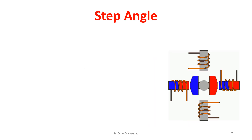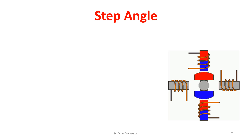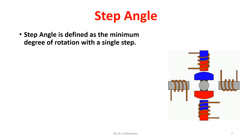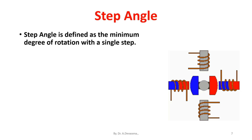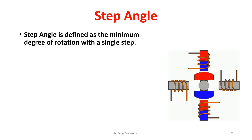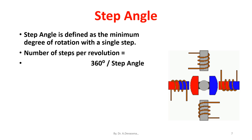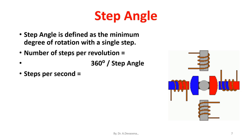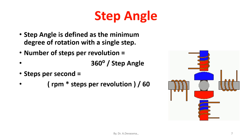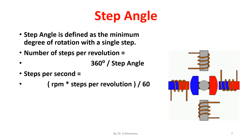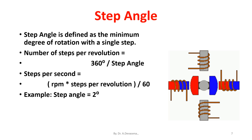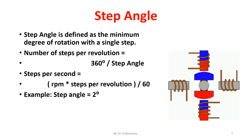Stepper motor shaft moves in a fixed repeatable increment which allows one to move it to a precise position. Step angle is defined as the minimum degree of rotation with a single step. Number of steps per revolution is equal to 360 degrees divided by step angle. Steps per second is equal to RPM multiplied by steps per revolution divided by 60. For example, if the step angle is equal to 2 degrees, then the number of steps per revolution is equal to 180.